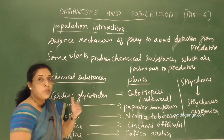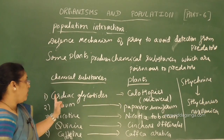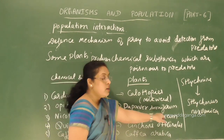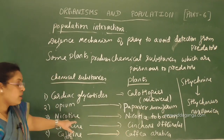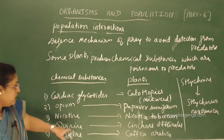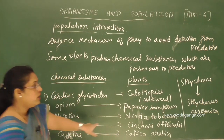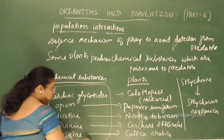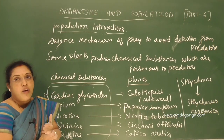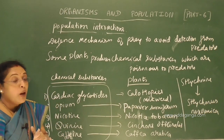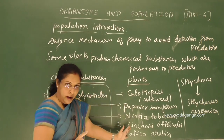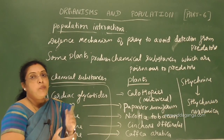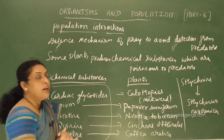These are plants which produce chemical substances to avoid predation. Calotropis produces cardiac glycosides; Papaver somniferum produces opium; Nicotiana tabacum produces nicotine; Cinchona officinalis produces quinine; Coffea arabica produces caffeine; Strychnos nux-vomica produces strychnine. These chemical substances disturb physiological functions in predators and sometimes may kill them.